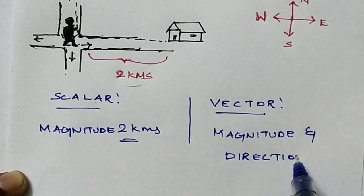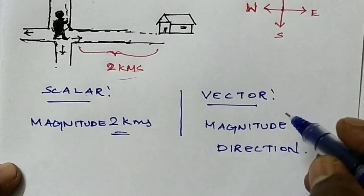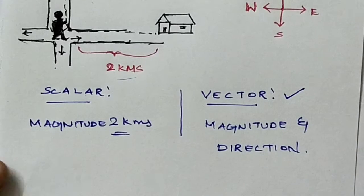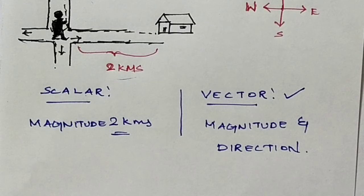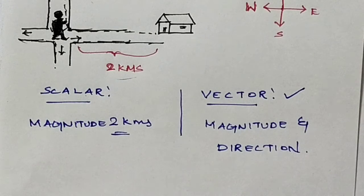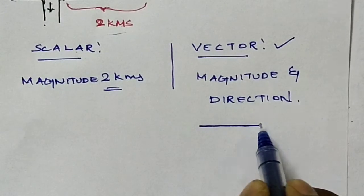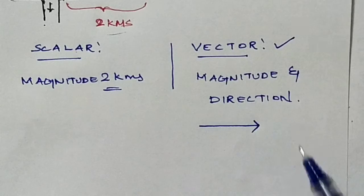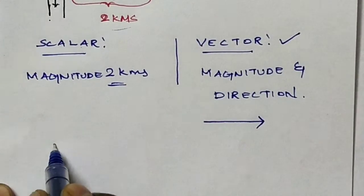Geometrically, a vector is a directed line segment. That is the simple representation of a vector. Now moving to the magnitude of the vector.